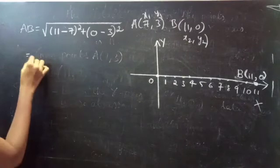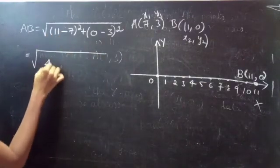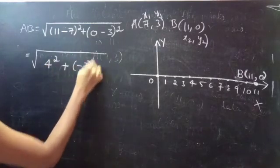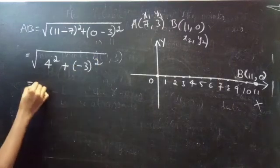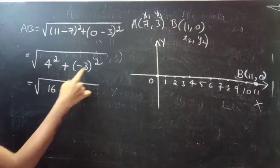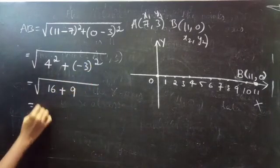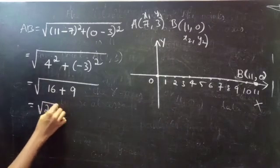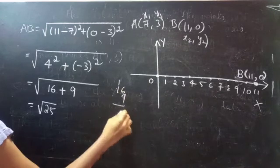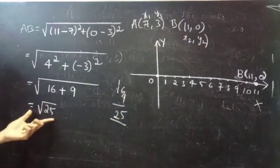Which equals square root of 11 minus 7 is 4, 4 square, plus 0 minus 3 is minus 3, whole square. So this equals 4 square is 16, plus minus 3 square, that is 3 square is 9. So this equals square root of 25. 16 plus 9 is 25.